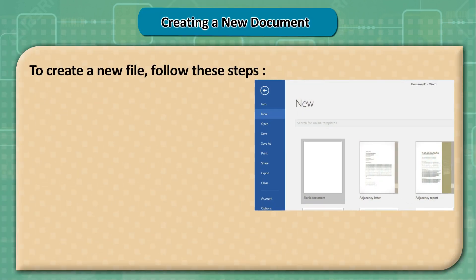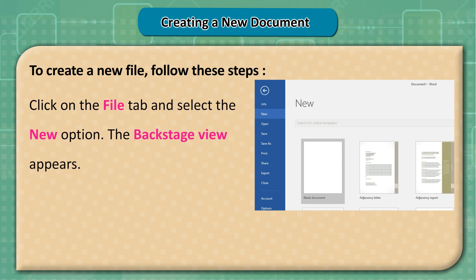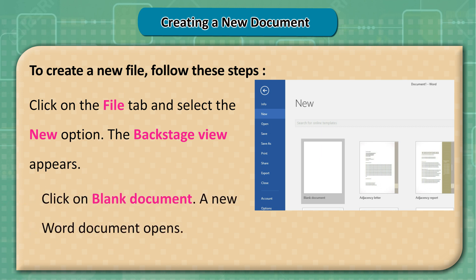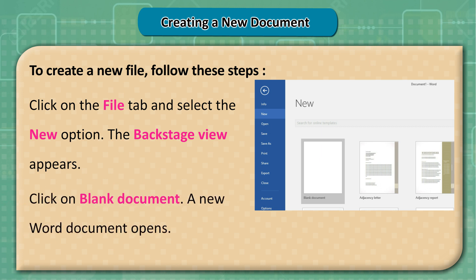Creating a New Document: To create a new file, follow these steps. Click on the File tab and select the New option; the Backstage view appears. Click on Blank Document and a new Word document opens.